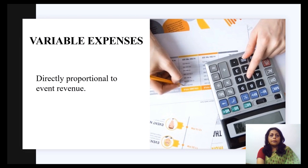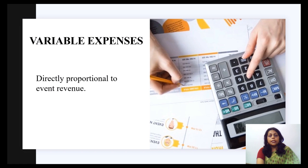Variable expenses are directly proportional to the event revenue. A variable expense is a corporate expense that changes in proportion to production output. Variable costs increase or decrease depending on a company's production volume — they rise as production increases and fall as production decreases. Examples of variable costs include the cost of raw materials and packaging.